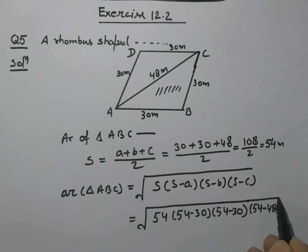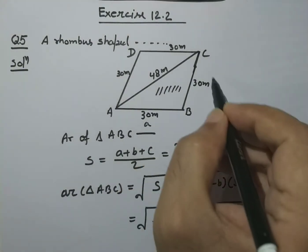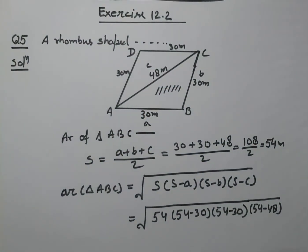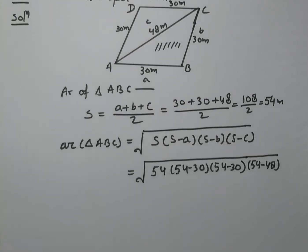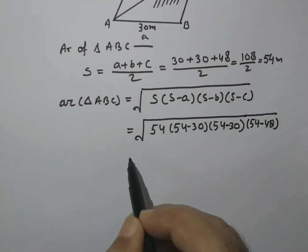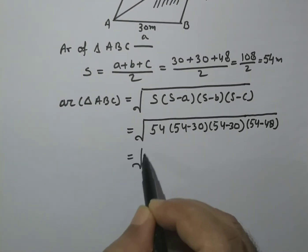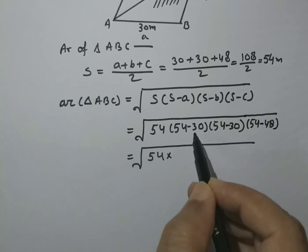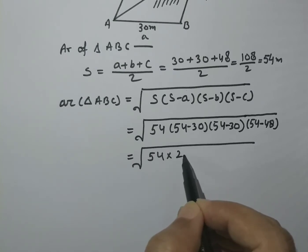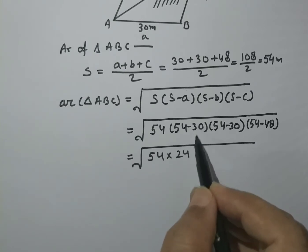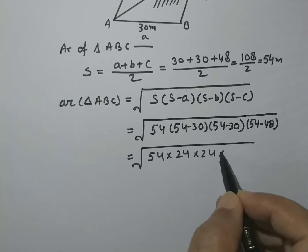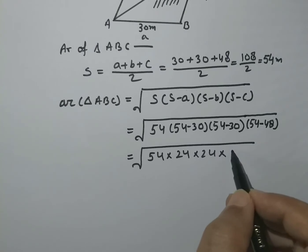So children, I've assigned the values — one as a, one as b, and one as c. Now let's solve this. We get 54 × 24 (from 54−30) × 24 (from 54−30) × 6 (from 54−48). Subtracting gives us 24, and also 24, and 6.